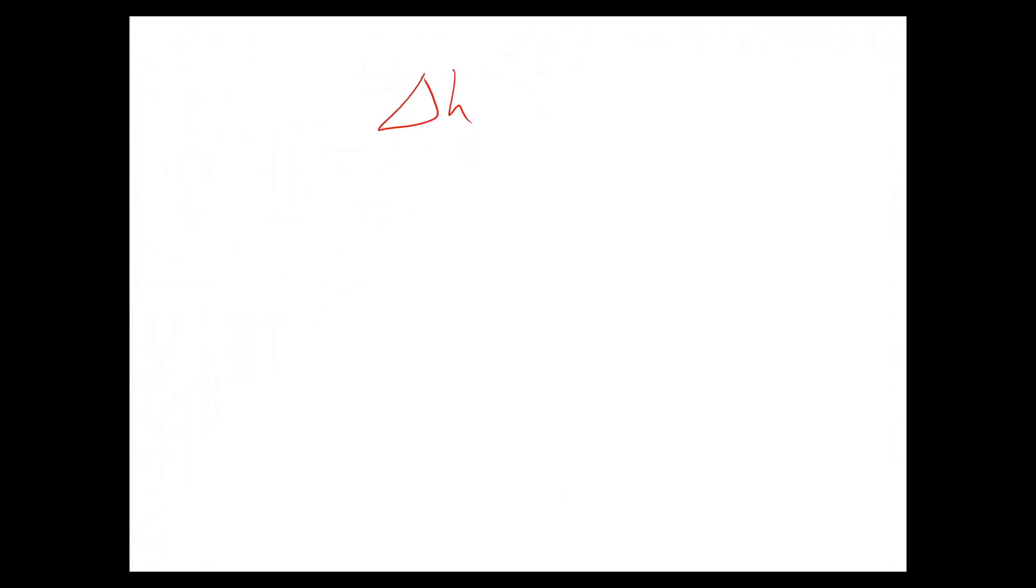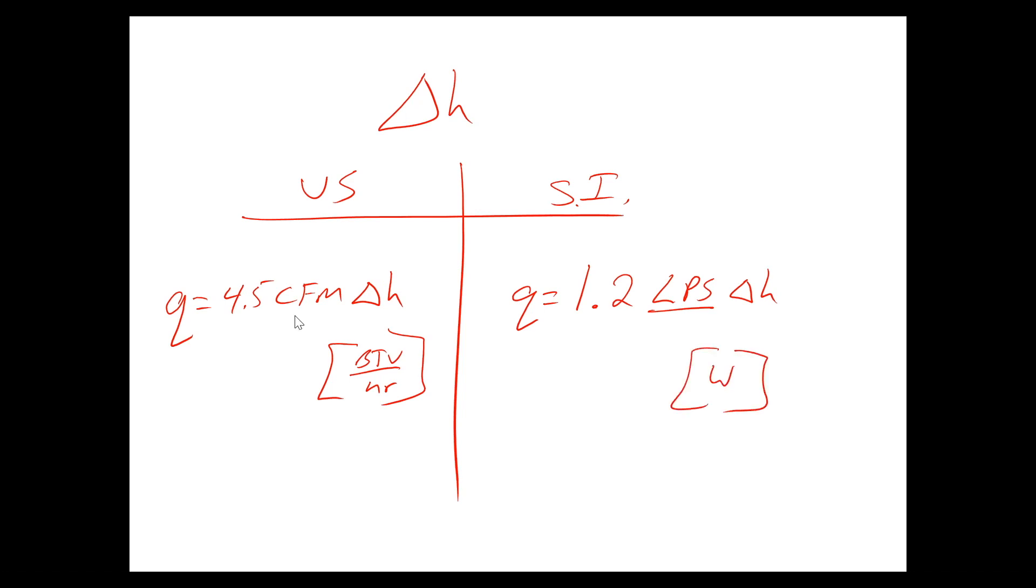And, in the U.S. system, the equation that we would plug that into is Q equals 4.5 times CFM times delta H. And, the units for this are going to be BTU per hour. This is somewhat of a shortcut equation. In the System International, the Q equation is slightly different. And, it's also a slightly different psych chart. But, all the mechanisms are the same. And, the equation for this is very similar. It's just different constants. For instance, this LPS means liters per second. And, the units for this are going to be watts, okay.